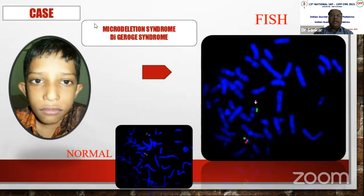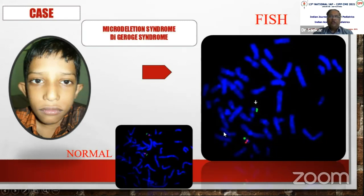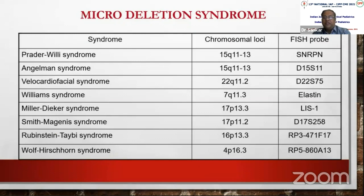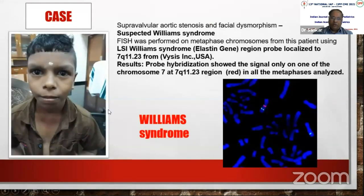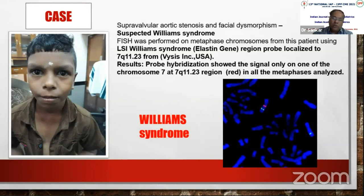For known microdeletion syndromes such as DiGeorge syndrome, we do not need microarray. Fluorescent in-situ hybridization (FISH) can be used — a specific probe shows signal absence in the deleted region. This approach also applies to Williams syndrome and Smith-Magenis syndrome. For these specific microdeletion syndromes, FISH directly confirms the diagnosis. However, FISH uses a locus-specific probe — only that targeted region can be tested, not the whole genome.